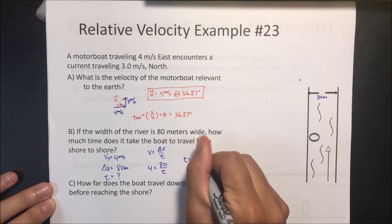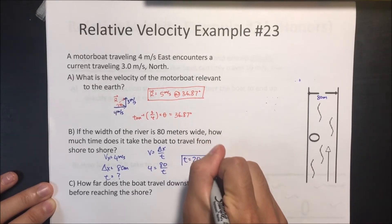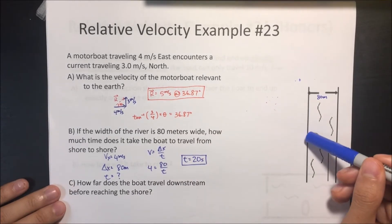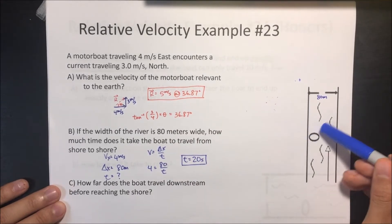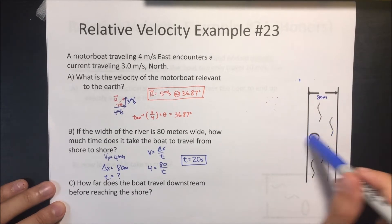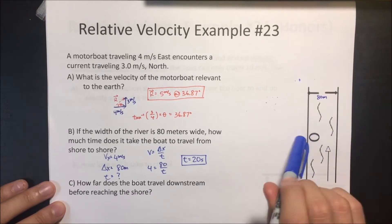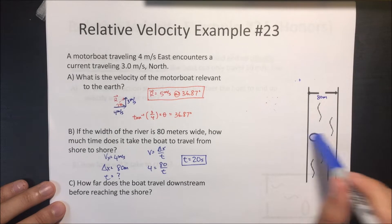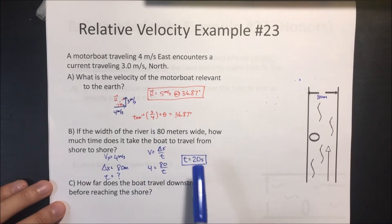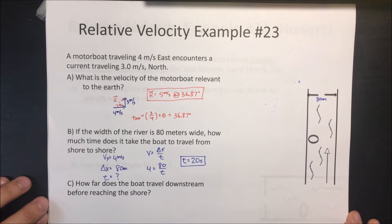Time equals 20 seconds. Even though the boat isn't traveling directly across — it drifts with the current — since it's moving 4 meters per second in x and covers 80 meters in x, we use only x-components to find the time.